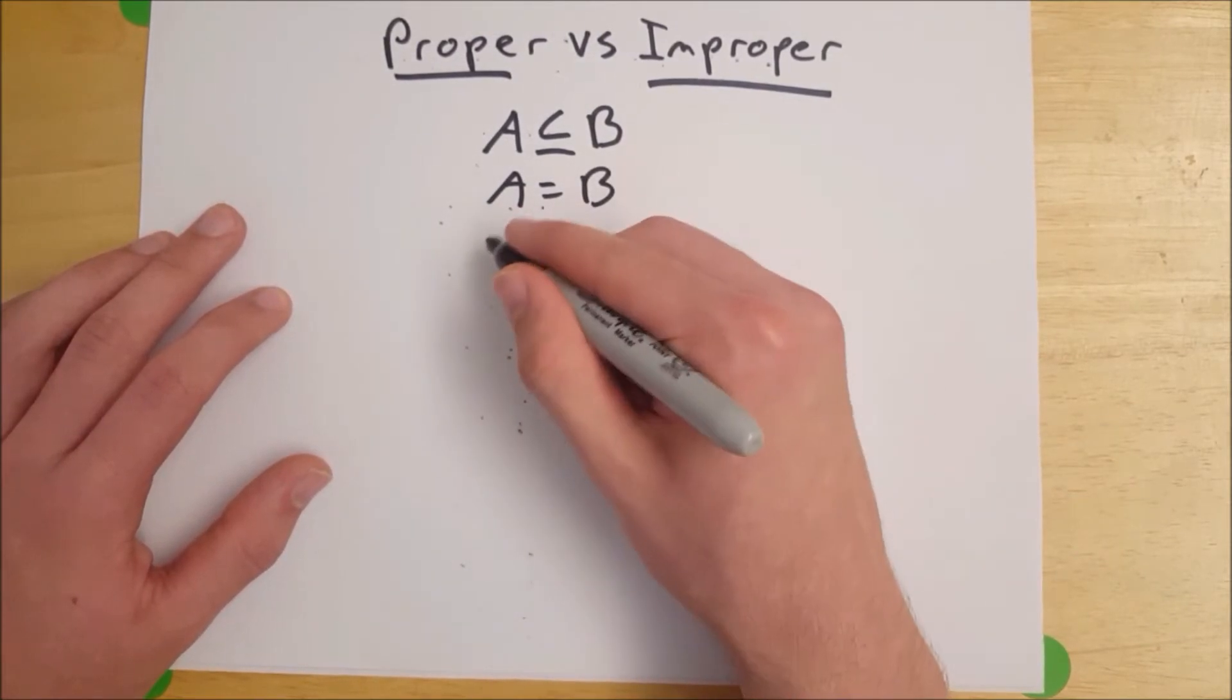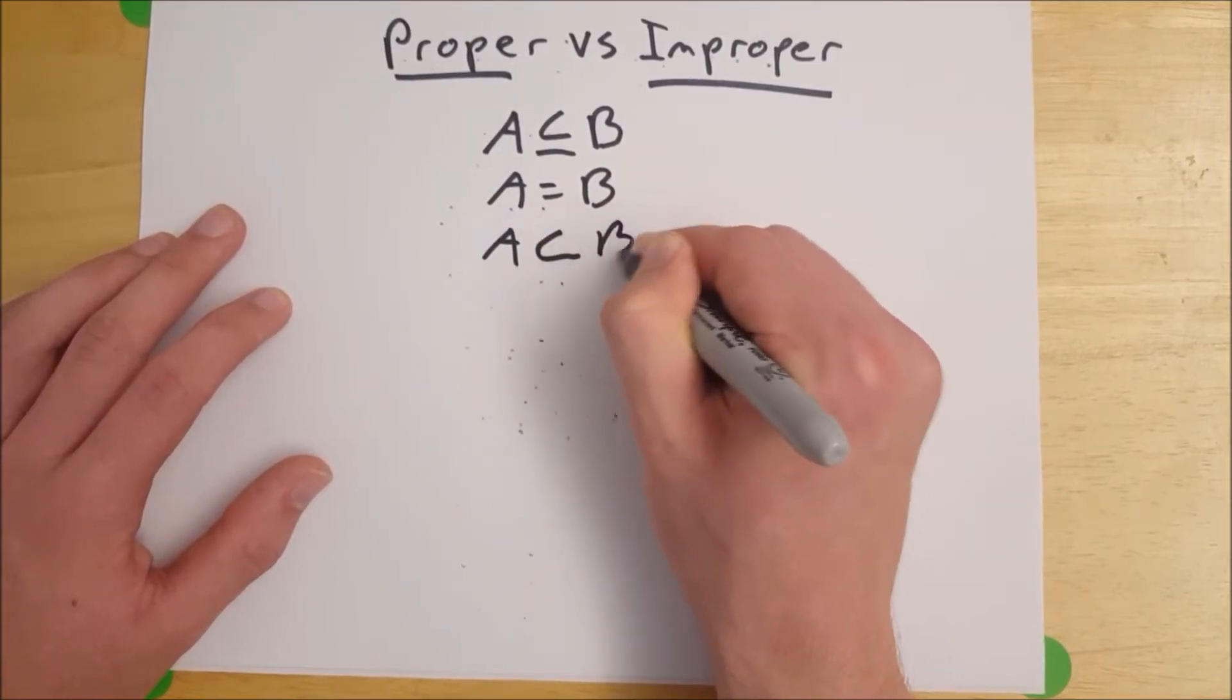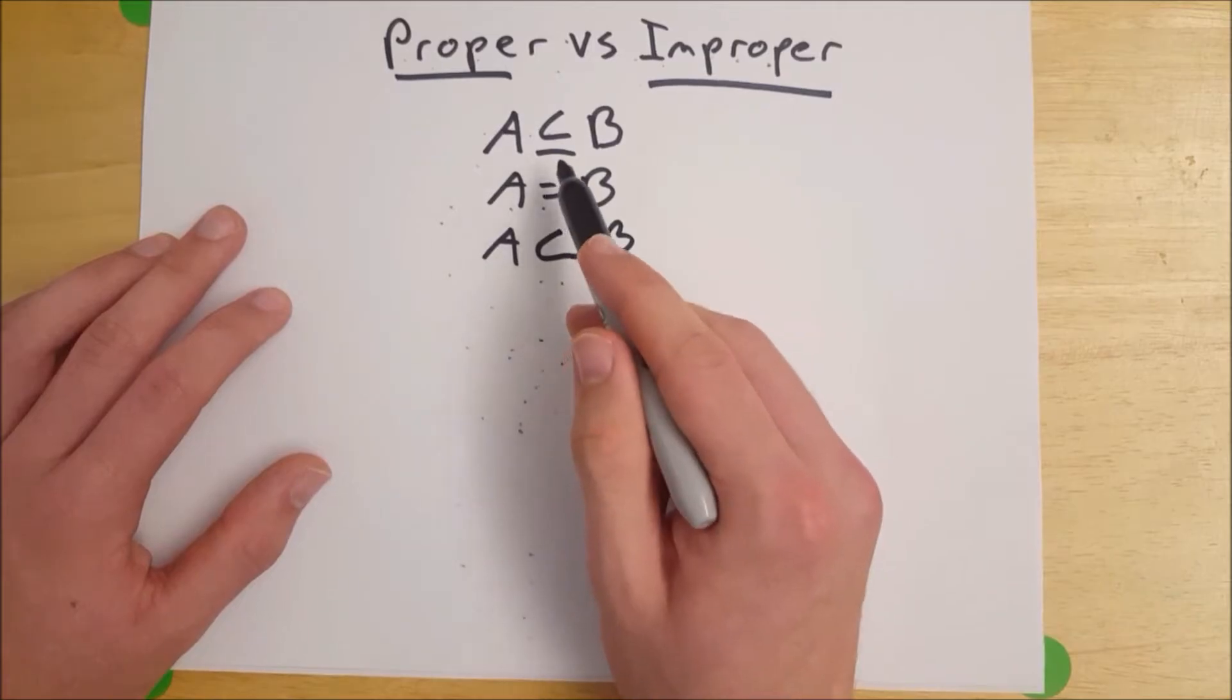Now to say that A is a proper subset of B, we would use this symbol here. So that is without the line underneath it.